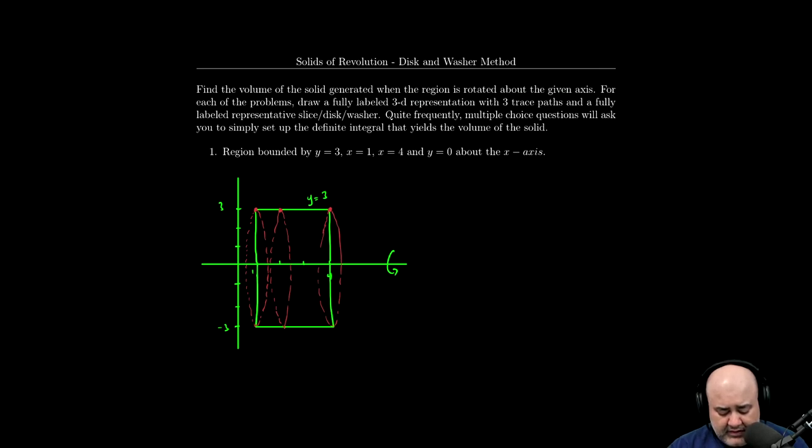Now, when we slice this, this is going to be a disk method problem, because there's no hole in this solid. So imagine taking your pencil or pen, holding it out in front of you. And then you spin it about some imaginary horizontal axis in front of you, it's going to generate or carve out in space, a cylinder.